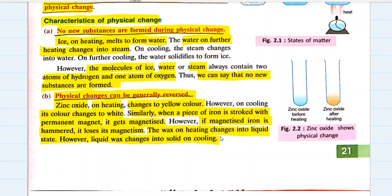But not all physical changes are reversible. For example, tearing of paper is a physical change because no new substance is formed — paper remains paper — but the torn paper cannot be made exactly like it was before tearing. Another example is cutting of hair: once you cut the hair, you cannot join the hairs back into their original form. That's an irreversible physical change. Cutting of hair, tearing of paper, and breaking of glass are physical changes because no new substances are formed.